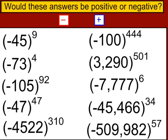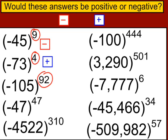Let's take a look at a few examples. Negative 45 to the ninth power — because the exponent is an odd number, the result would be negative. Negative 73 to the fourth power — because this is an even number, you would end up with a positive result. Negative 105 to the 92nd power — it's even, so positive. Negative 47 to the 47th power — odd exponent, so the result is negative.